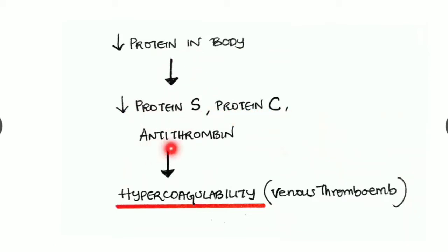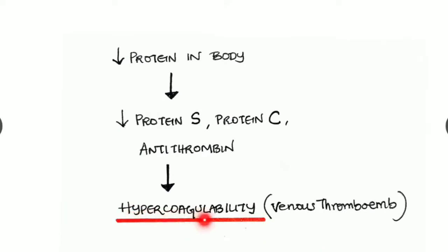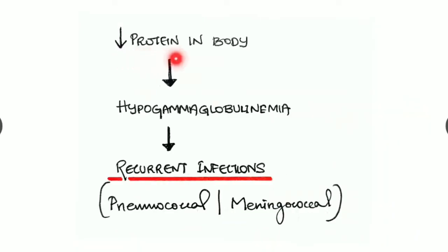Due to reduced protein in the body, levels of Protein C and antithrombin are reduced, resulting in hypercoagulability and increased risk of venous thromboembolism. Reduced protein levels also cause hypogammaglobulinemia — reduced levels of gamma globulin — meaning reduced immunity, resulting in recurrent infections like pneumococcal and meningococcal infections.